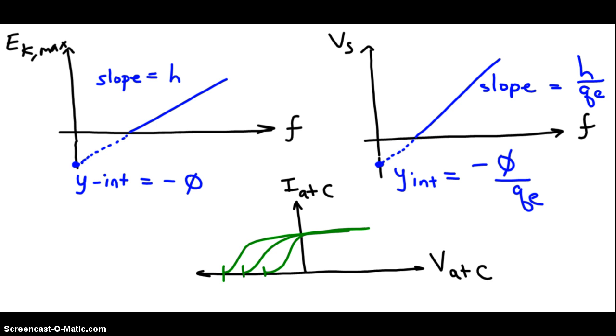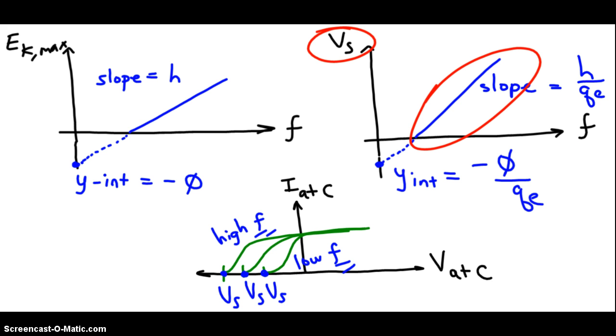If we were to take all of these data points, and this one down here was low frequency. If we were to plot the frequency value on the x-axis and the stopping voltage value on the y-axis, we would produce this line with stopping voltage shown as a function of frequency.